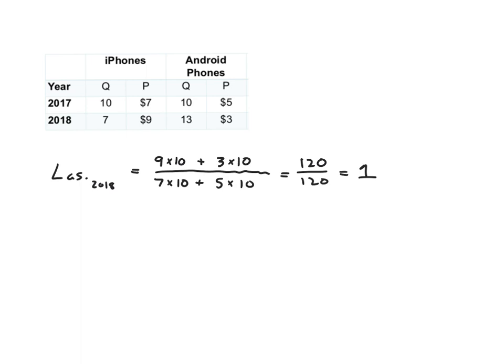And essentially what that's saying is, as far as the Laspeyres index is concerned, prices haven't changed from 2017 to 2018. Now if you look individually, iPhones got more expensive, Android phones got cheaper, and the Laspeyres index is saying, well, it averages out. On average, phones cost about the same.